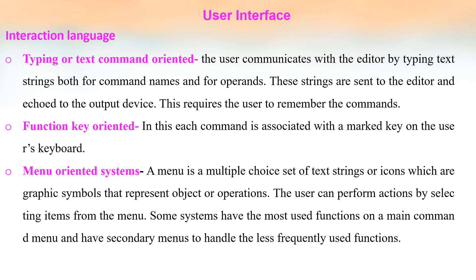The interaction language can be of three types: typing or text command oriented, function key oriented, and menu oriented. In text command oriented interaction, the user types commands or text strings, so the user must remember the commands. In function key oriented interaction, each function key is associated with a particular command marked on the keyboard. In menu oriented systems, the user is presented with a multiple-choice set of text strings or icons and can perform actions by selecting items from the menu. Some systems have a main menu with secondary submenus as well.